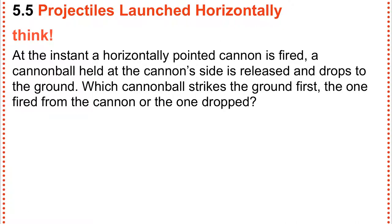So here's a question. At the instant a horizontally pointed cannon is fired, a cannonball at its side drops to the ground, which hits first? Well, if you go back to the picture we saw, one's being hurled, the other one's being dropped. They're dropping at the same rate. So they will hit the ground at the same time.